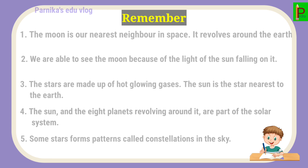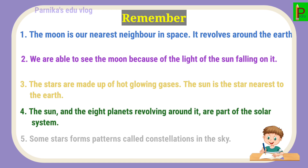Let's remember the key facts: The Moon is our nearest neighbor in space and revolves around the Earth. We see the Moon because of sunlight falling on it. Stars are made up of hot glowing gases. The Sun is the star nearest to the Earth. The Sun and the eight planets revolving around it form the solar system. Some stars form patterns called constellations in the sky.